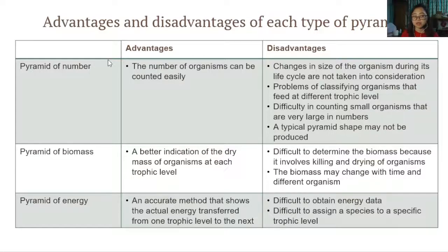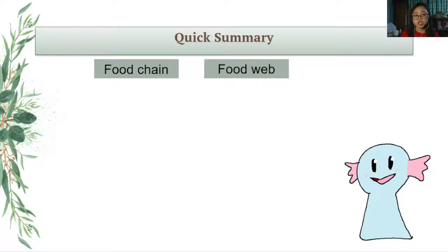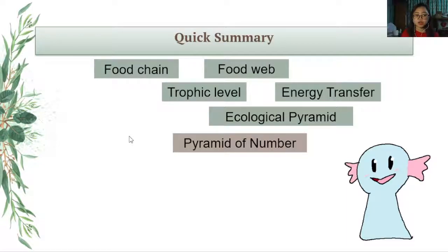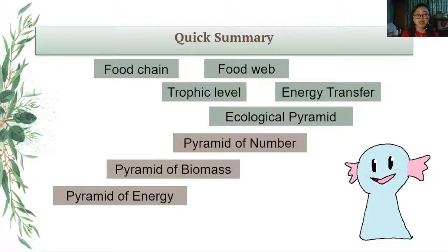Just a very quick summary of what we went through in Subtopic 2.2: we talked about the food chain, the food web, the trophic levels, energy transfer between trophic levels, and the three ecological pyramids — pyramid of numbers, pyramid of biomass, and pyramid of energy.